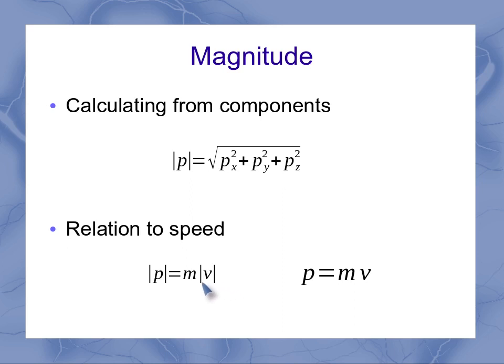Because most textbooks don't use the absolute value signs to indicate magnitude, they simply use a plain font symbol without the vector arrow on top.